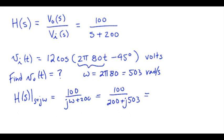Expressing that in polar form, we have 0.185 at an angle minus 68.3 degrees.